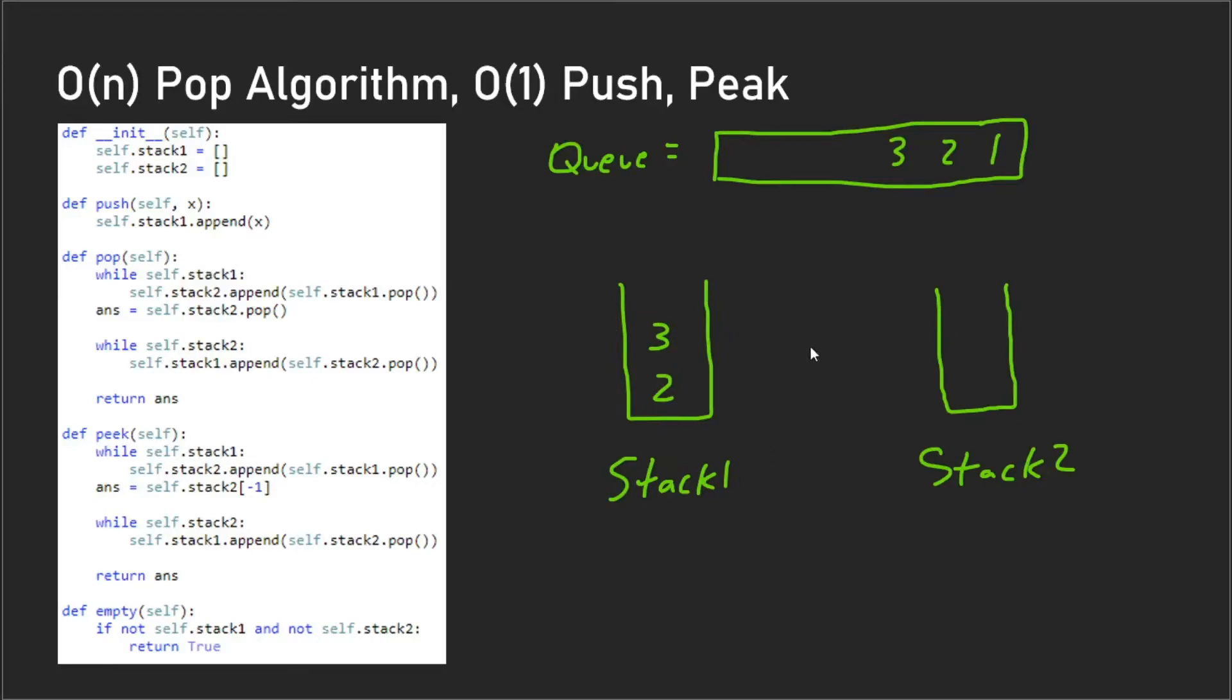And what you're left with is this after the pop operation, and you can go on and keep doing pushes and pops and the algorithm will work as expected. And that's an O(n) time complexity for both the pop and the peek algorithms, so I should change this to O(n) for peek here.